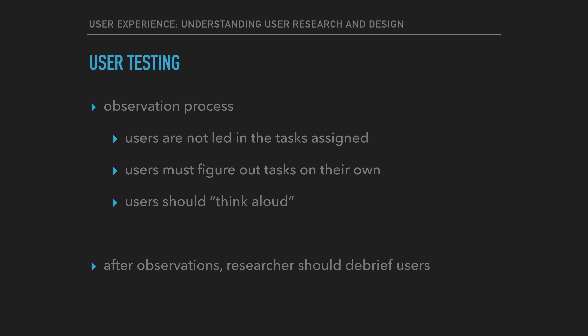As part of the process of observing users attempt to use a system, it is important to ensure that they are not led in the tasks assigned. The researcher must avoid providing the users with clues, tips, or insights on how to go about performing particular tasks. The users must struggle to perform tasks and figure them out on their own. If there are certain terms in the interface that are part of the task instructions, the researcher must be careful not to use such leading terms, as these will tip off the users on where to go and how to approach the problem.